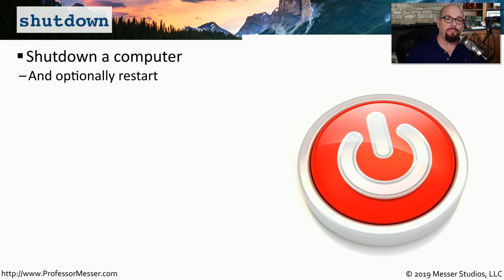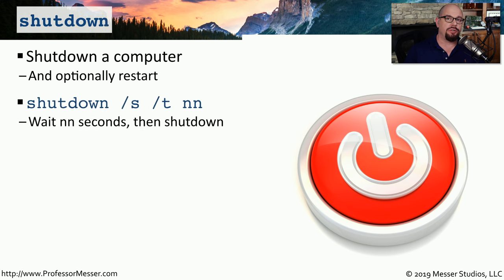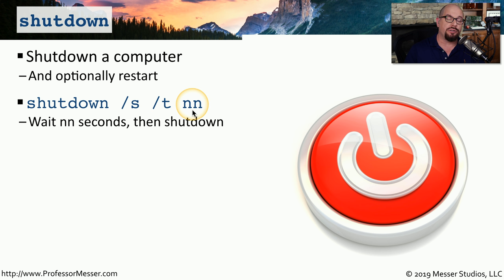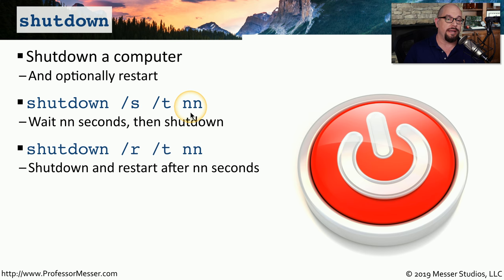Most of the time we shut down from the desktop or the power button, but if you're working on a remote computer in a different room, building, or city, you may want to shut down or reboot from the command line using the 'shutdown' command. Use 'shutdown /s' to completely shut down the computer after a timer completes, and 'shutdown /t 60' to wait 60 seconds before shutting down. If you want the computer to reboot after shutting down, use 'shutdown /r' instead of '/s', combined with '/t' as the countdown timer.